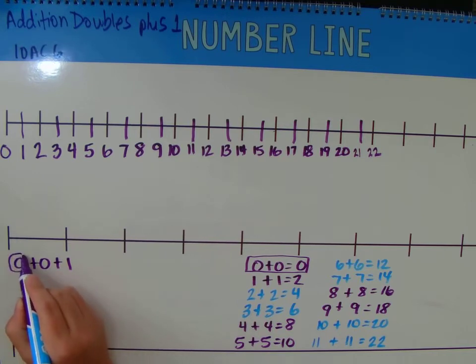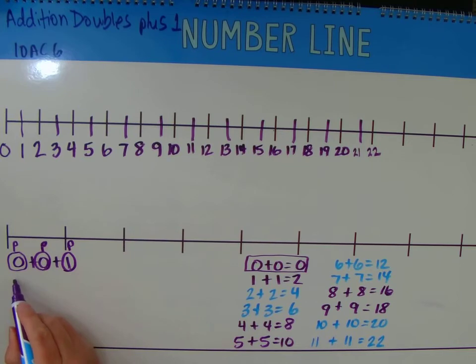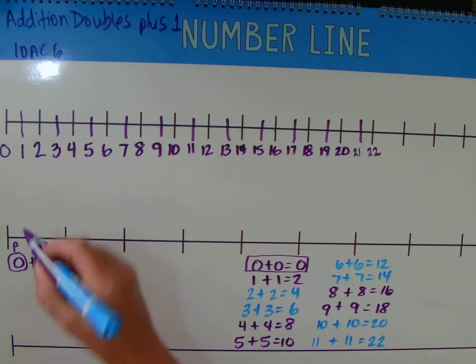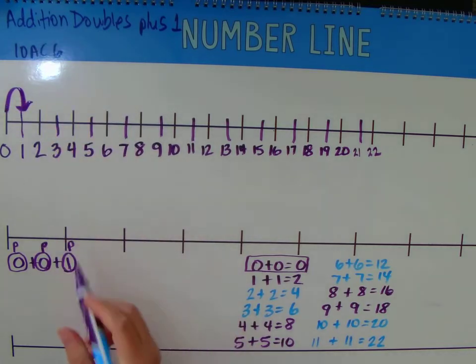We're adding 0 as a part, 0 as a part, and 1 as a part. 0 is nothing, 0 is nothing, and we add one more, giving us 1.